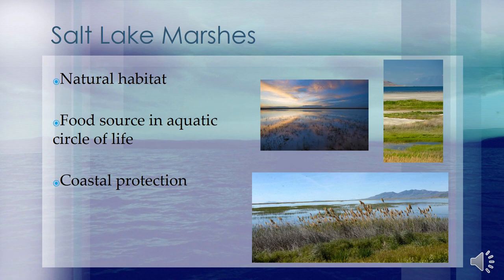Between sand bars and the shore, lagoons often develop. If the water in the lagoon is calm and fed by rivers, marshes and mudflats can be found. In these mudflats, vegetation starts to grow. These salt marshes continue to grow as more mud is trapped in the marsh by the vegetation. Apart from the different vegetation species, salt marshes are a food source and a habitat to various species of insect, animal and reptile.